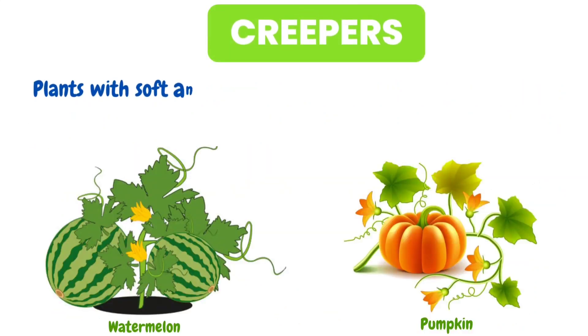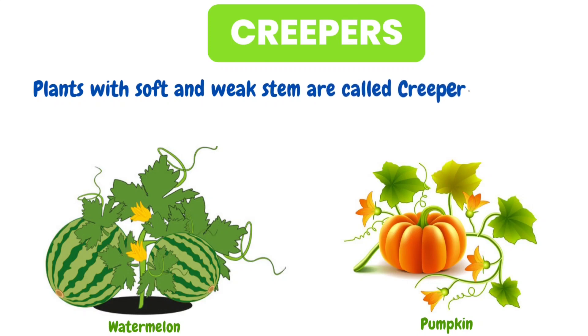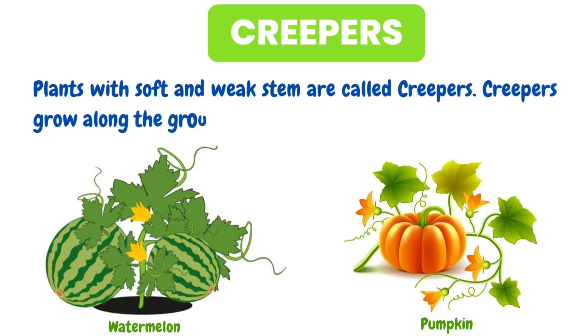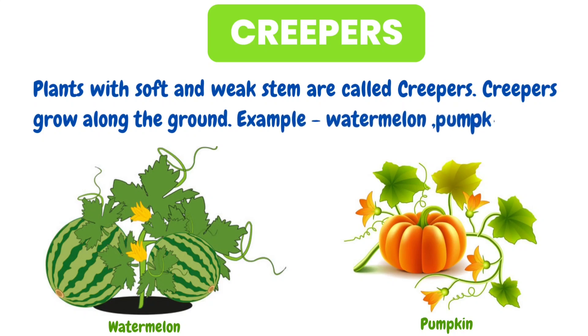Creepers: Plants with soft and weak stem are called creepers. Creepers grow along the ground. Examples: watermelon, pumpkin, etc.